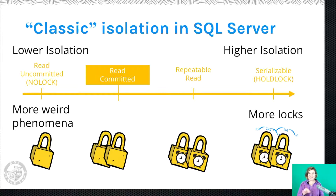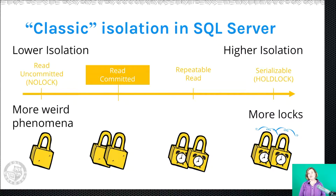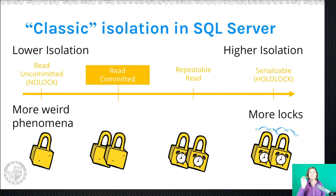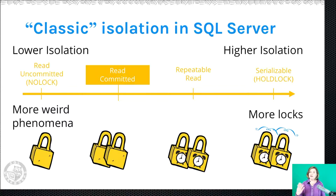Even Repeatable Read has problems in scenarios where data is being inserted — it can suffer from something called ghost phenomena, where there are ghost rows it didn't see. You can raise the isolation even further to Serializable. Serializable not only ensures that if I read a row I can read it again, but it also protects a whole range of data so that nothing is inserted in a range I already read. That protects data in another way, but holds locks even longer, making it an even bigger problem for blocking. So the reason Read Committed is the default isn't that we want phantom rows or non-repeatable reads.